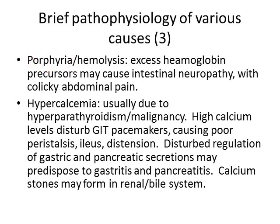Porphyria is known to cause abdominal pain. Hemolysis can cause abdominal pain due to the breakdown products of hemoglobin and excess hemoglobin precursors. Although we rely on hemoglobin to deliver oxygen and nutrients, the waste and precursor products are all toxic to us. As these toxic products build up, they attack the intestinal nerve supply — and porphyria is especially known to cause colicky abdominal pain due to this neuropathy.